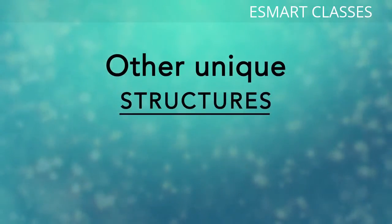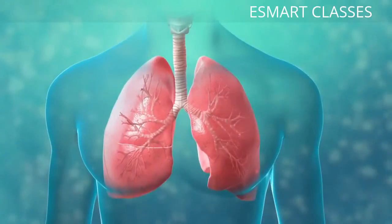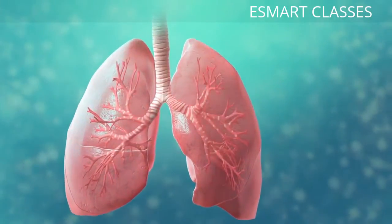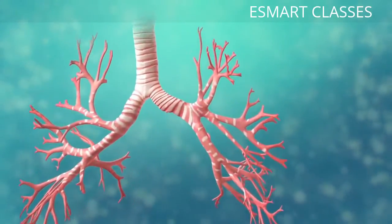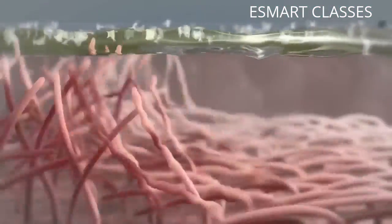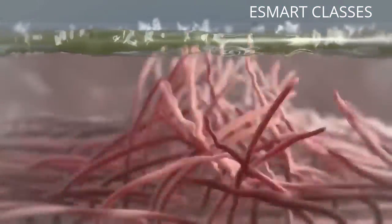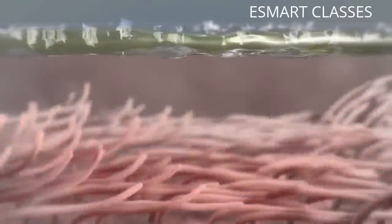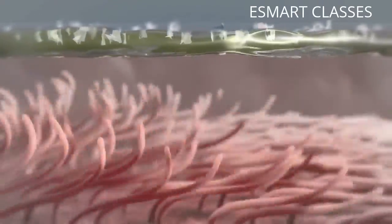There are many other unique structures that only some cells have. Here are just a few. In humans, for example, the respiratory tract is lined with cells that have cilia. These are microscopic hair-like projections that can move in waves. This feature helps trap inhaled particles in the air and expels them when you cough.